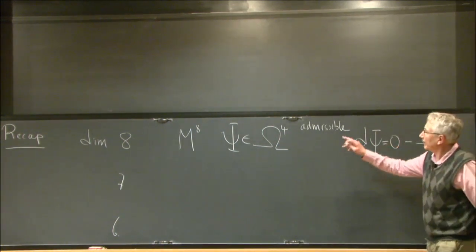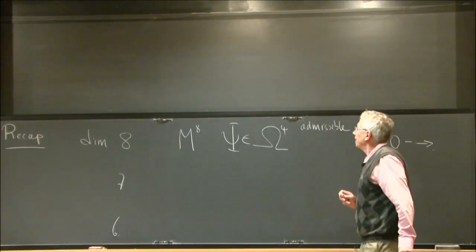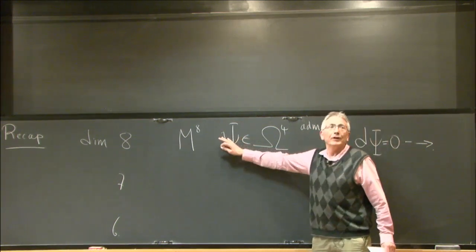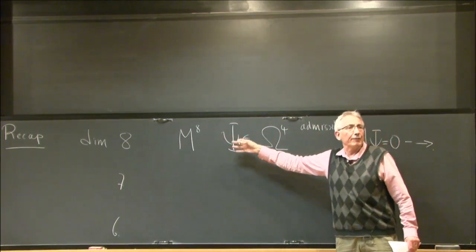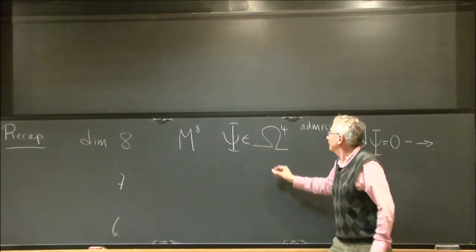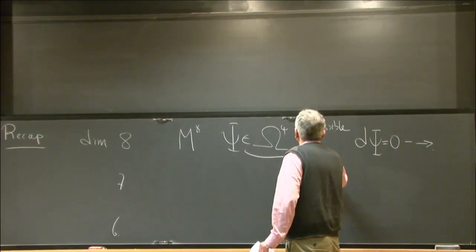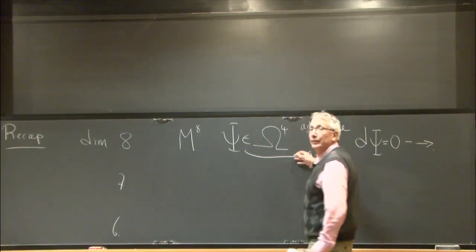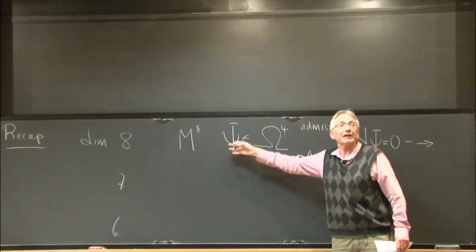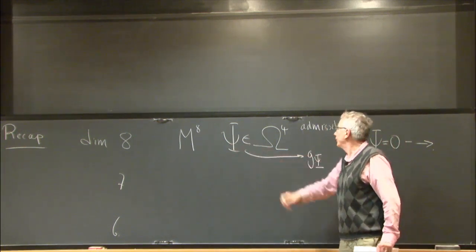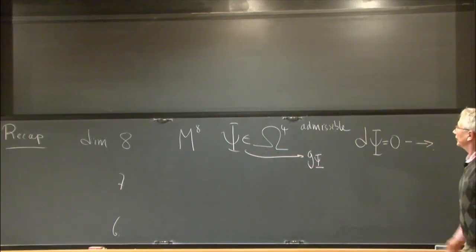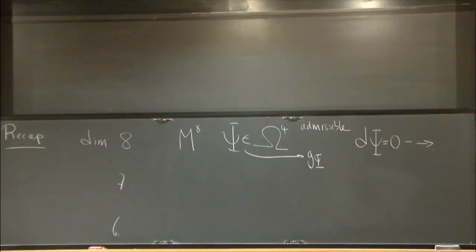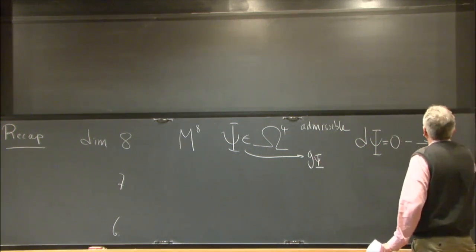Part of that story, which I didn't quite have time to explain the algebra of, is that from this 4-form one can construct a Riemannian metric — a Riemannian metric g_psi constructed entirely algebraically from this form. And then the statement is that this metric will have holonomy contained in spin-7.